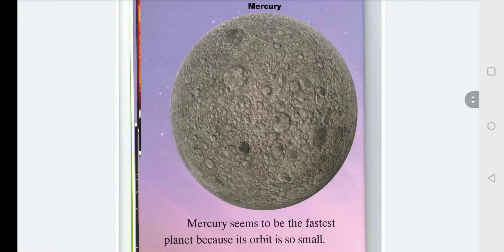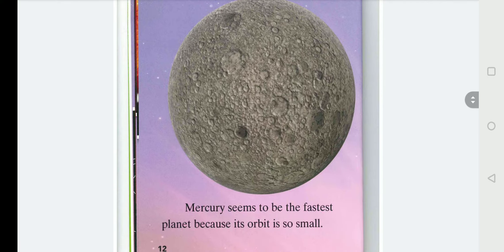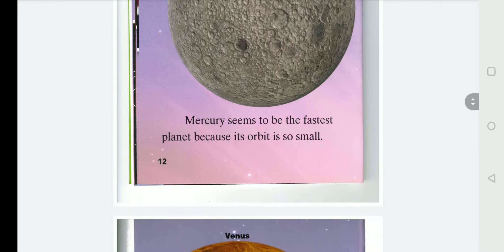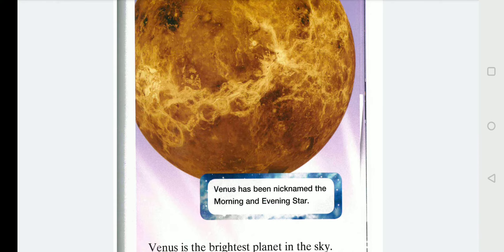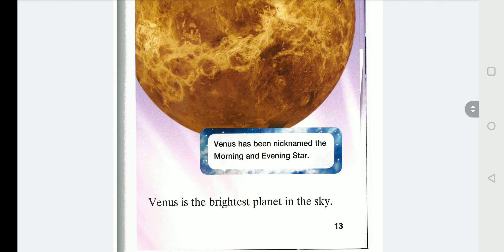Mercury seems to be the fastest planet because its orbit is so small. Venus has been nicknamed the morning and evening star. Venus is the brightest planet in the sky.